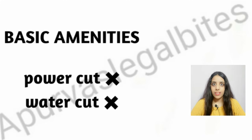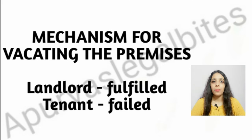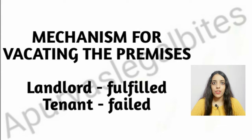Next, basic amenities. In case of any dispute between the landlord and the tenant, the landlord cannot cut the power and water supply. Next, mechanism for vacating the premises. If the landlord has fulfilled the conditions as stated in the rent agreement, like giving notice, and the tenant fails to vacate the premises on expiration or termination of the tenancy, the landlord is entitled to double the monthly rent for 2 months and 4 times thereafter. However, there is an exception to this rule.